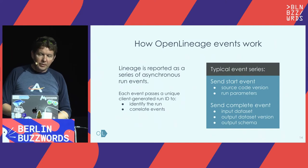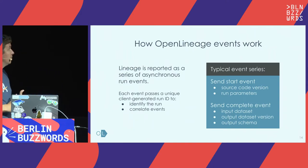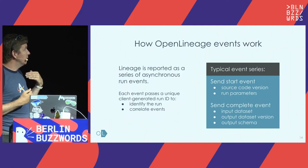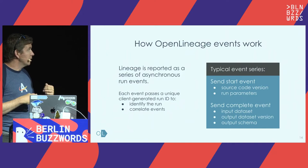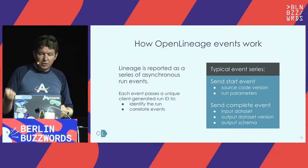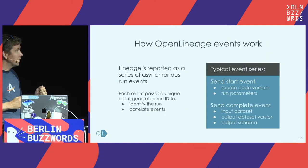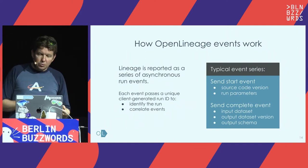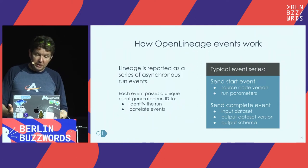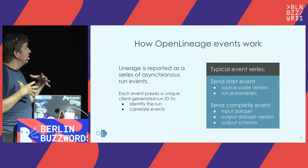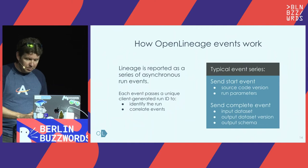Lineage is reported as a series of asynchronous run events. Whenever a job, SQL query, or transformation happens, we send a start event that may contain information like what was the version of the source code and what were the run parameters. When it's finished, a complete event is sent that tells you about what were the inputs and outputs and the schema of the data set at the time it was read. There's a run ID that helps correlate the start and complete events.